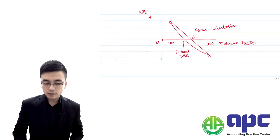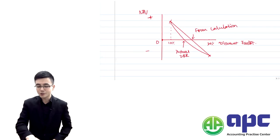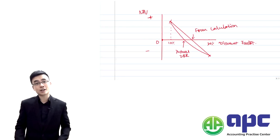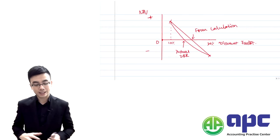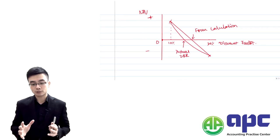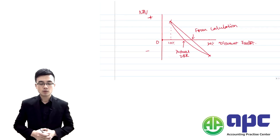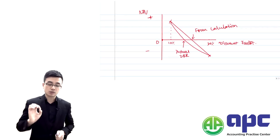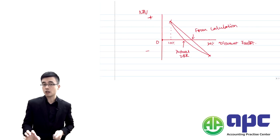The IRR from the formula is on the right-hand side of the actual IRR on the graph — so the formula overstates the actual internal rate of return. In real life, we always adjust for this, but in the exam we don't need to do that adjustment. That is the first disadvantage of the IRR calculation.